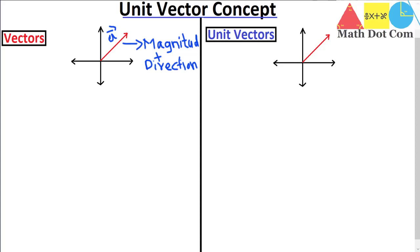Now what about the unit vector? As its name indicates — unit means one — the magnitude of a unit vector will always be one. So if the magnitude of a vector is one, you call it a unit vector, and it will have direction as well. The magnitude of the unit vector will be one, while the magnitude of a regular vector could be any value. This is the first basic difference between the two.